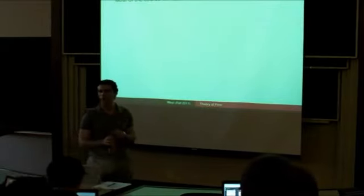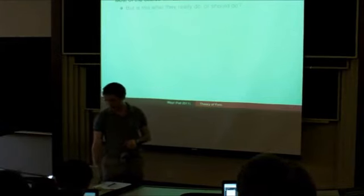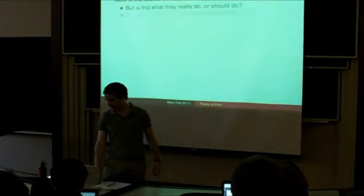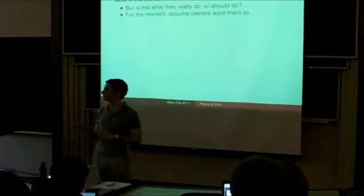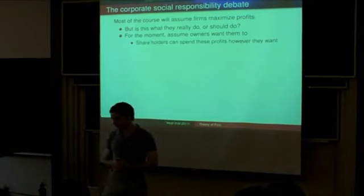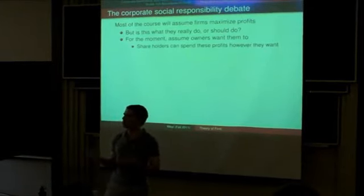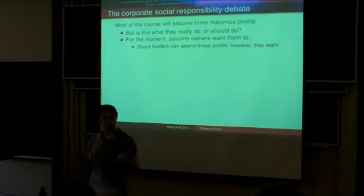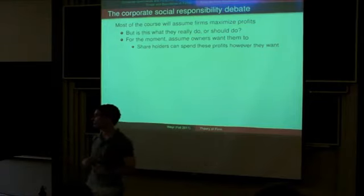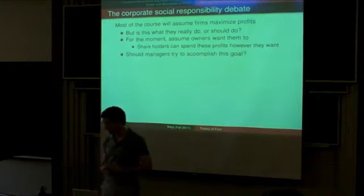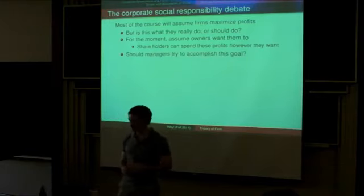During most of this course we'll assume firms maximize profits. But a natural question is whether this is what firms should do or what they actually do. Let's assume for now that the owners — the shareholders — actually want them to do this. One reason shareholders may want profit maximization is that those profits get paid back to them, and once they have the money, they can do whatever they want with it — give to charity, buy a house, whatever purpose they have.